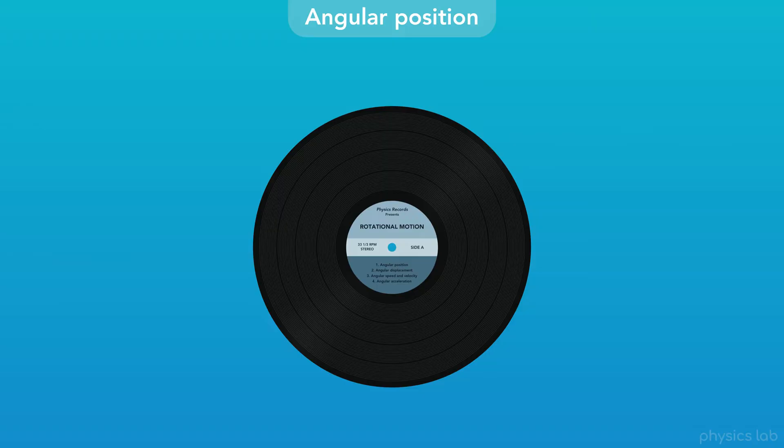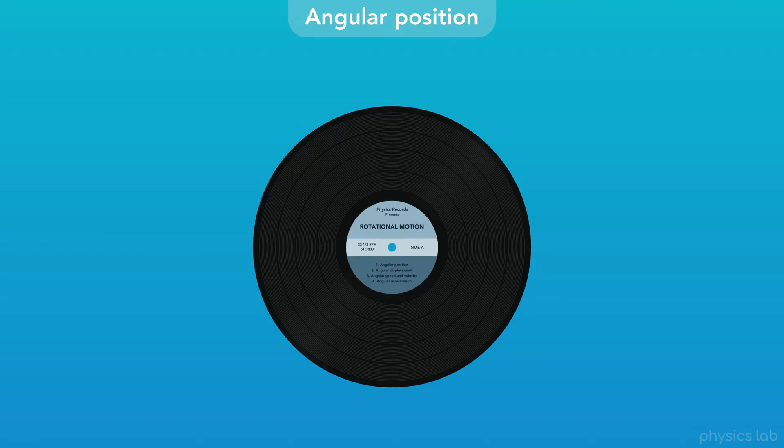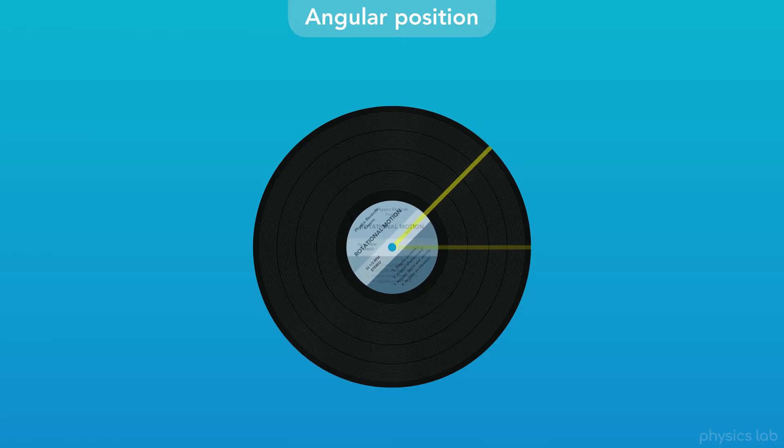So let's say the record starts in this position, then the record rotates and ends up in this position. How can we describe these two positions and track the motion of the record? It's a little hard to see how the record is moving, so let's place a line on it from the center to the edge. Here's that same motion again. The record starts out in this position, then rotates to this position.